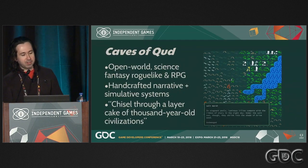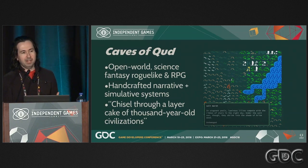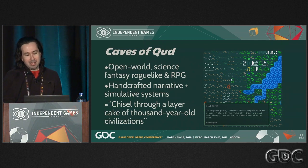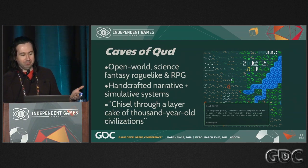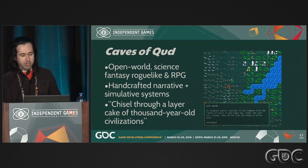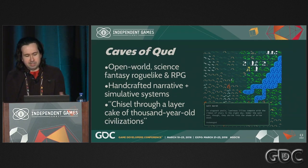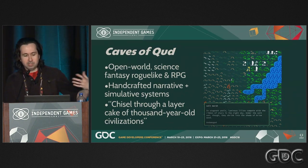Caves of Qud is an open world science fantasy roguelike and RPG, heavily inspired by an old pen-and-paper RPG called Gamma World — a derivative of Dungeons and Dragons where nuclear apocalypse destroyed the world and nuclear radiation mutated and uplifted animals and plants to human-level sentience. There's a handcrafted narrative like you might see in a Bethesda open-world RPG, but we've woven it around simulative systems: physical systems where every wall has a melting point and you can dig a tunnel anywhere; social systems with 60 factions; and most recently, this historical simulation. The tagline is 'chiseled through a layer cake of thousand-year-old civilizations.'